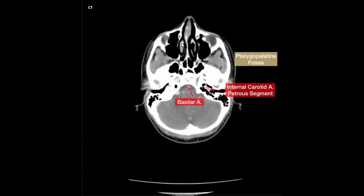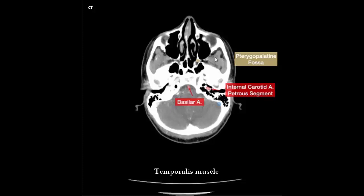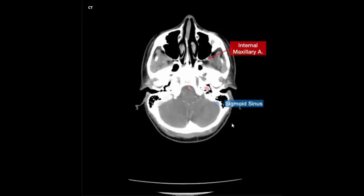Nasal septum, right and left turbinate, right and left maxillary sinus, right and left nasolacrimal ducts, right and left temporalis muscle. Right and left internal carotid artery, basilar artery. Right and left temporalis muscle, internal carotid artery, basilar artery, sigmoid sinus.